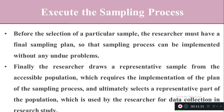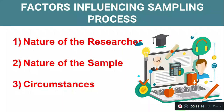Now let's see another important topic: what are the factors influencing the sampling process? The sampling process is influenced by three main factors: first, the nature of the researcher; second, the nature of the sample; and third, the nature of the circumstances.